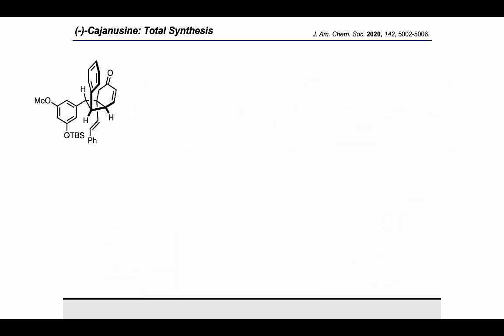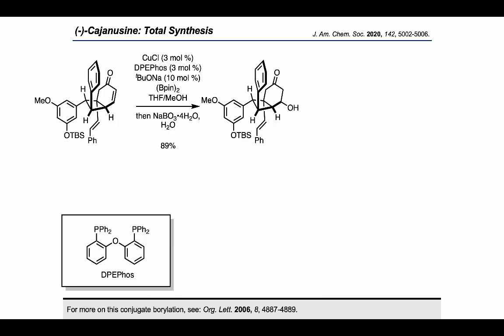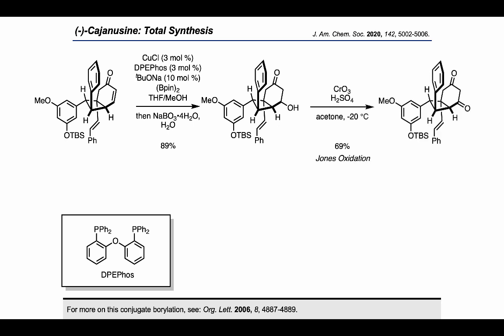Then, conjugate borylation and oxidation gave the hydroxyketone product in excellent yield, and Jones oxidation provided the 1,3-dione.